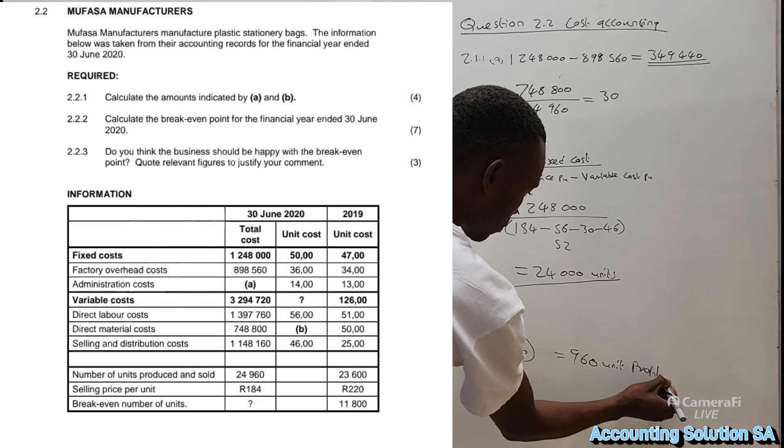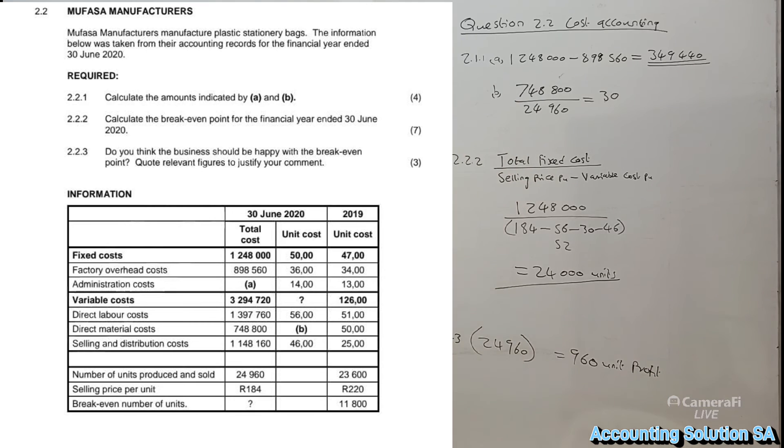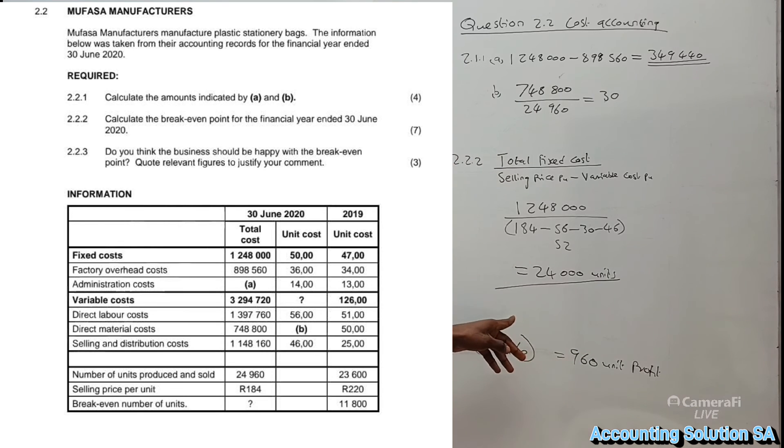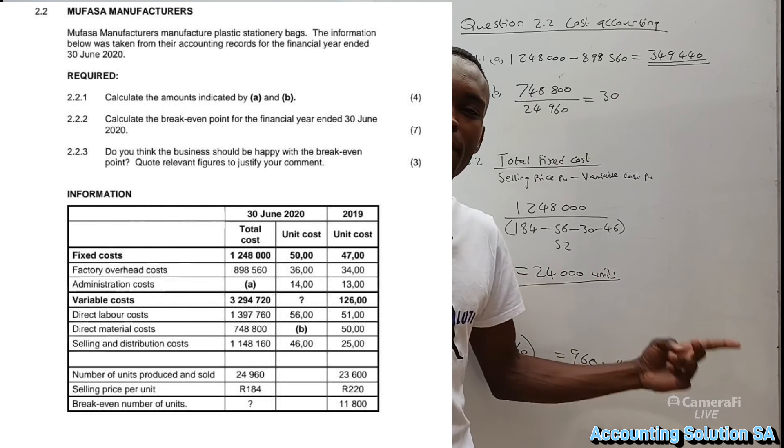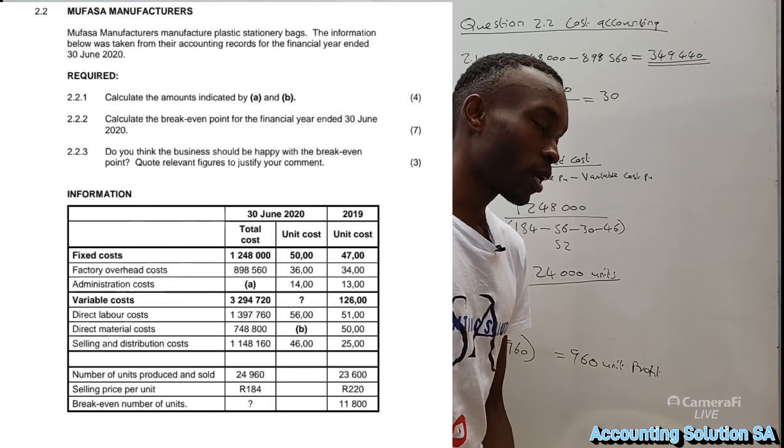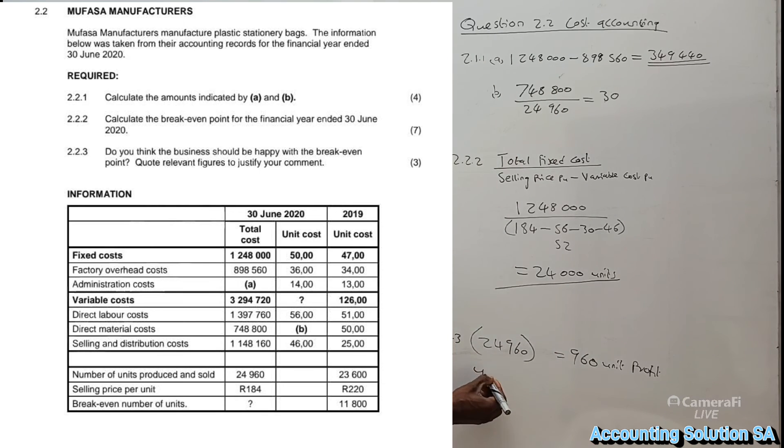This is the number of goods that they make a profit on, which means their break-even point is still fine because what they're producing is more than the point of no profit, no loss. If they sell all of them, they are still going to make a profit of 960 units. But if they produce less than breaking point, they are going to make a big loss. For this one we can say yes, the business is on the right track and the owner should be happy.